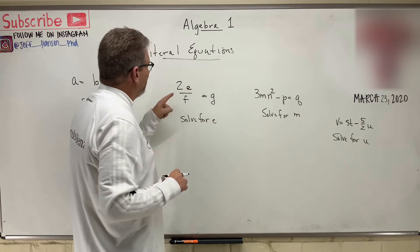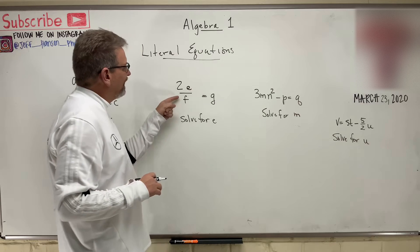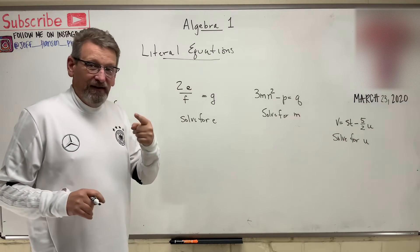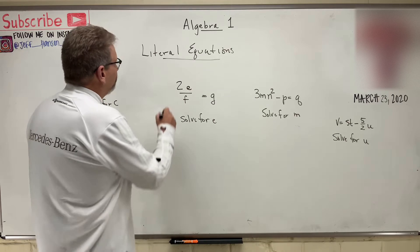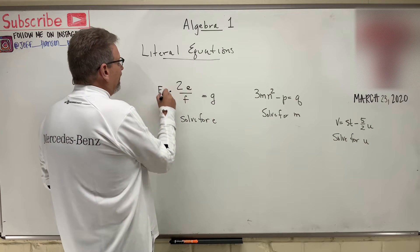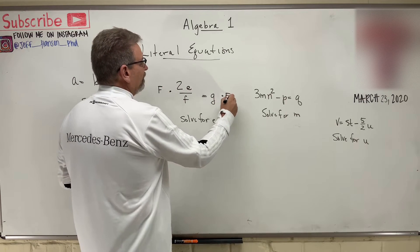Let's look at this one. Solve for E. We want E all by himself. So, how do we get rid... You know, first thing, let's get rid of this fraction here. Let's multiply both sides by F, okay?